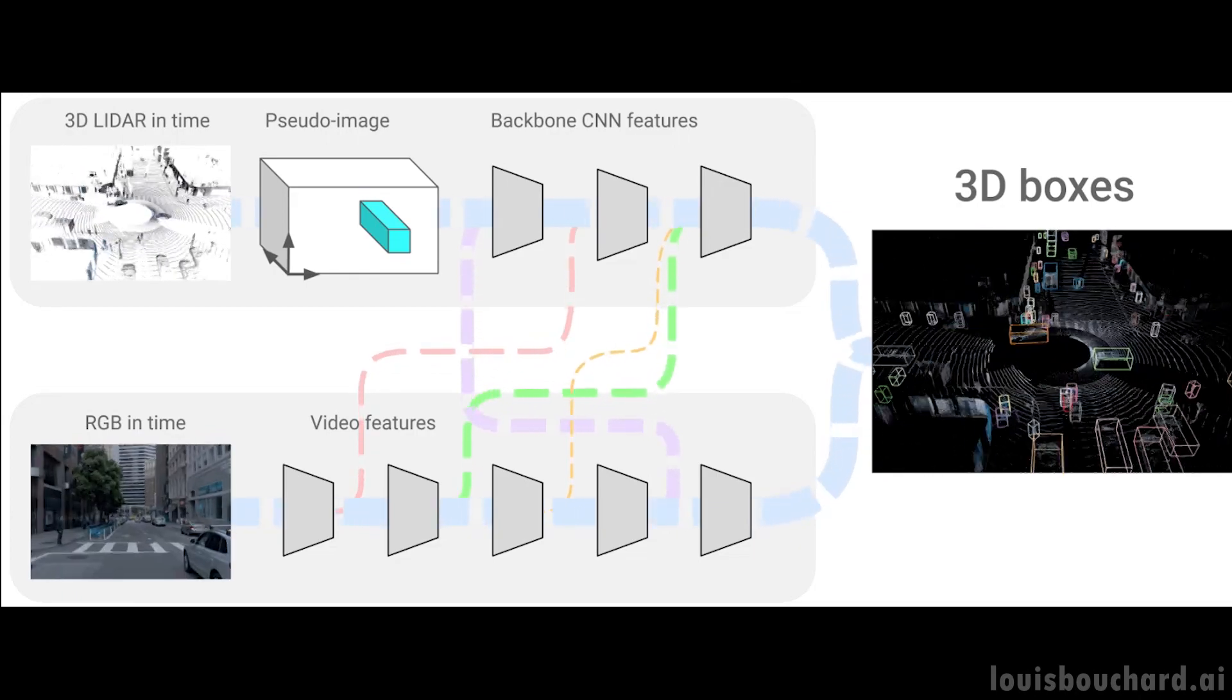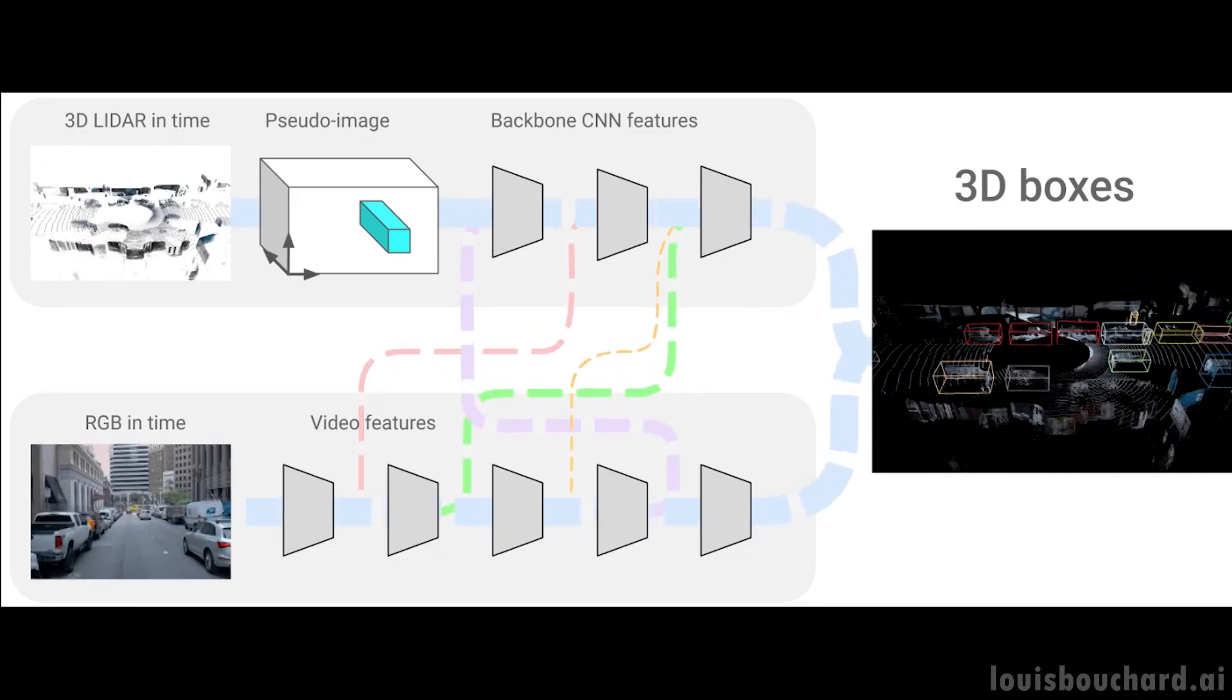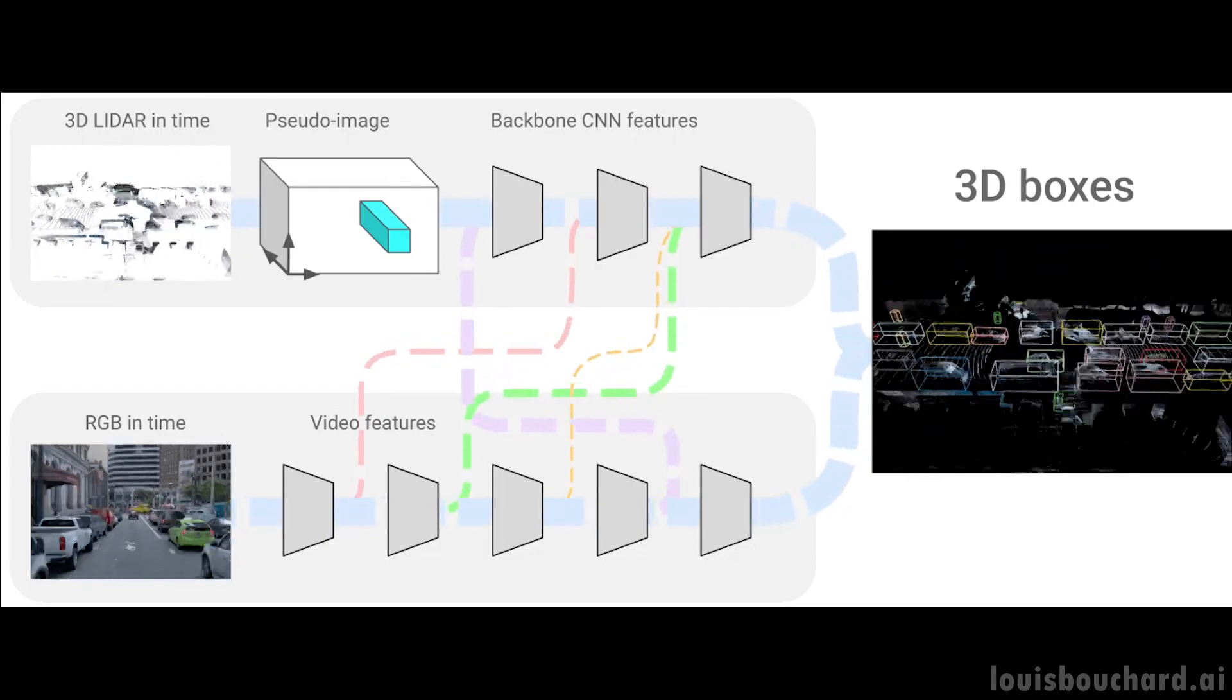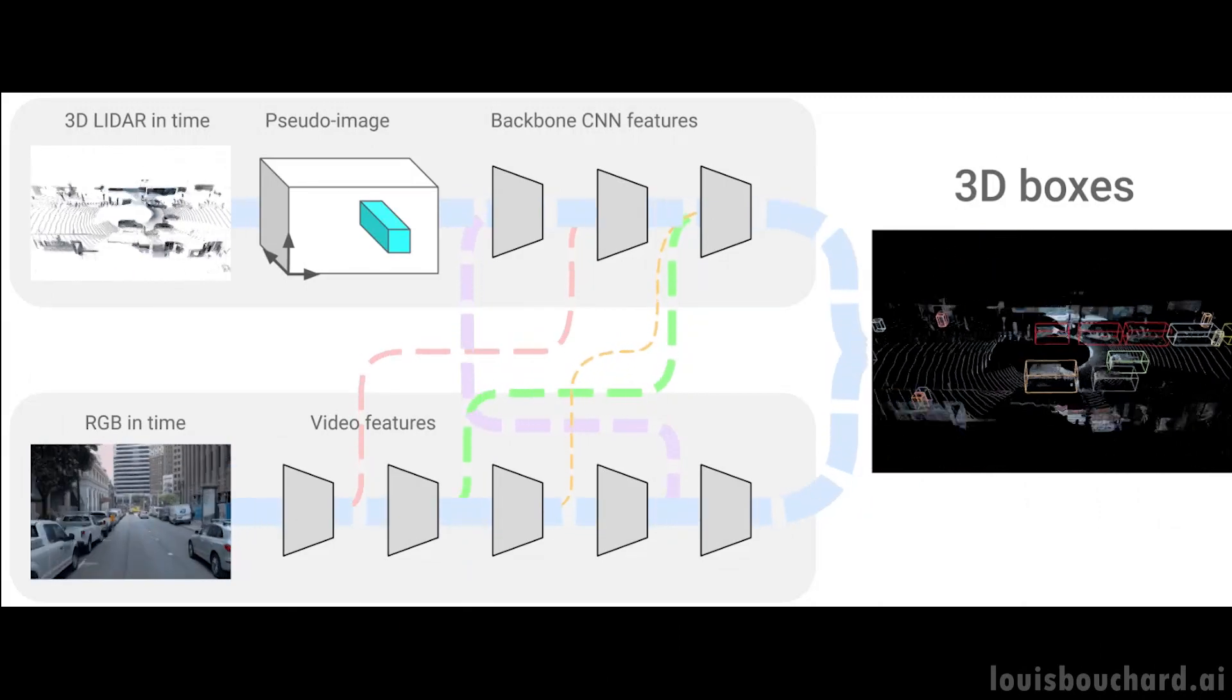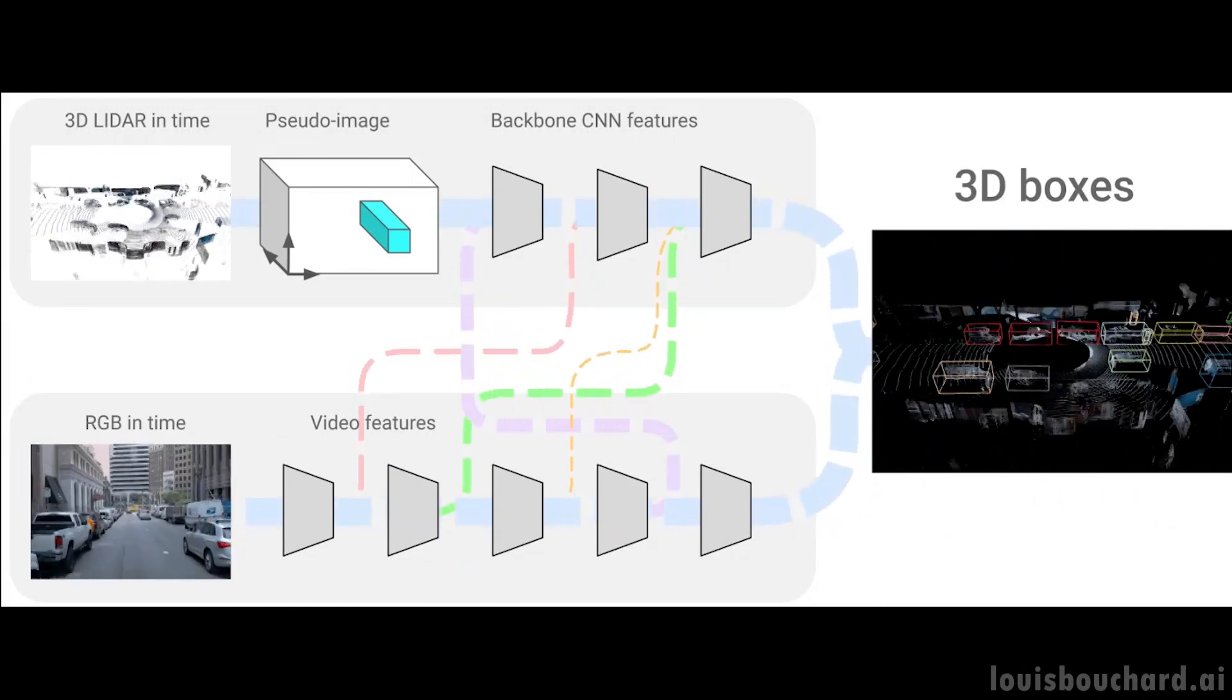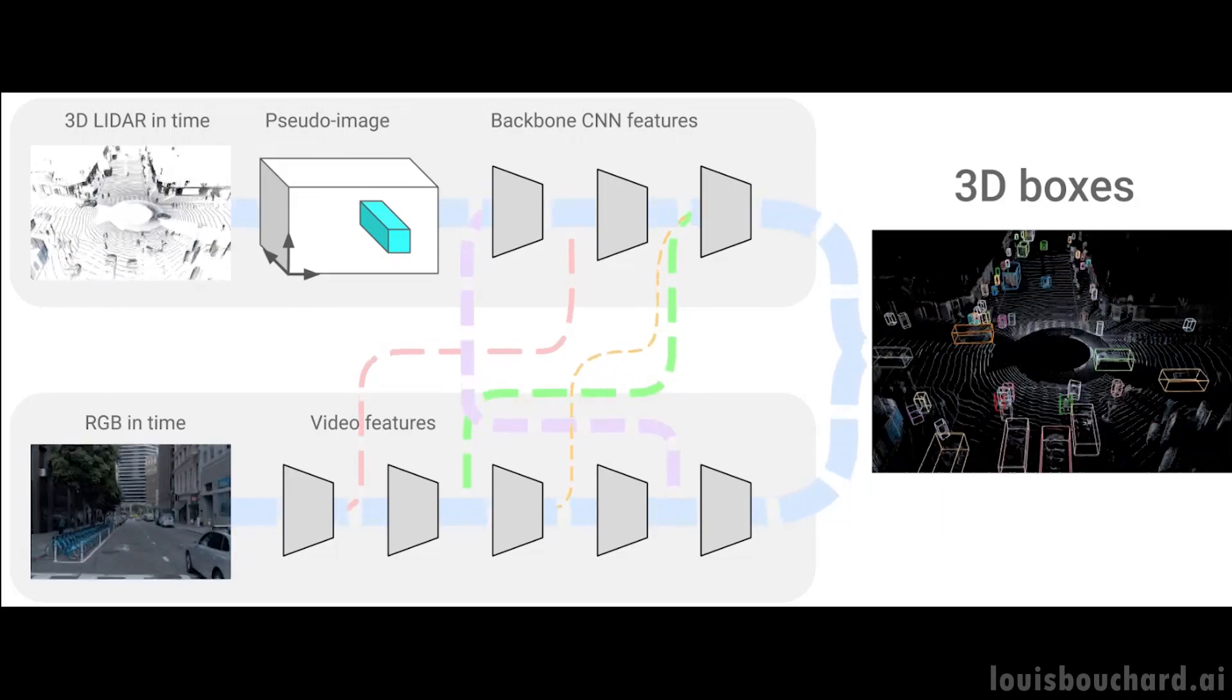This data translation between the two branches is what the network learns during training, in a supervised way, with a similar process as in the self-attention mechanisms I covered in previous videos by trying to recreate the real model of the world. But to facilitate this data translation, they use a model called PointPillars, which takes point clouds and gives a two-dimensional representation.